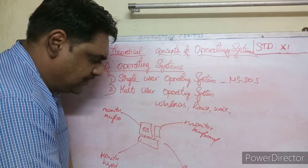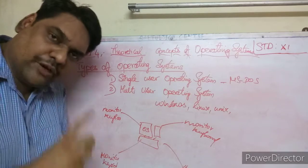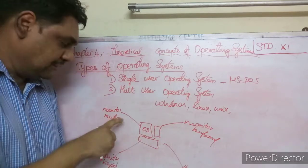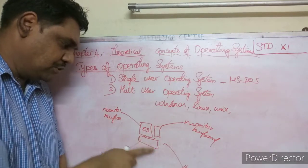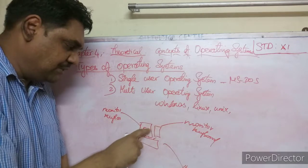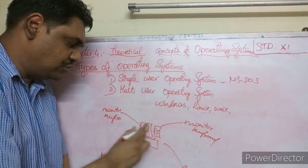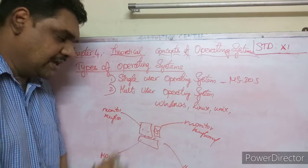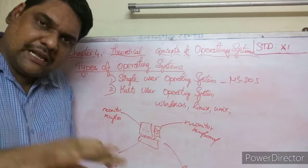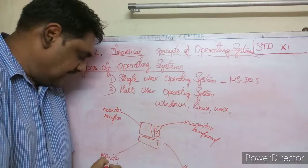In a multi-user setup, there is a main computer with a monitor, keyboard, mouse, and CPU where the OS is stored. Other computers connected to it are dummy terminals — they appear to be computers but they actually send instructions to the main computer.